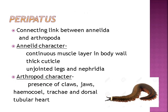Peripatus is the connecting link between Annelida and Arthropoda. Annelid characters: continuous muscle layer in body wall, thick cuticle, unjointed legs and nephridia. Arthropod characters: presence of claws, jaws, haemocoel, trachea and dorsal tubular heart.